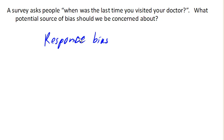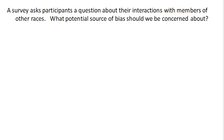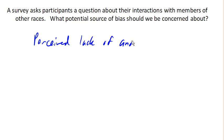Suppose a survey asks participants a question about their interactions with members of other races — how they get along with, say, Black people or Asians. What would we be concerned about here? Here we have something called a perceived lack of anonymity. Particularly if this was being given in a face-to-face interview process, the person being asked might — if they have racial biases — be uncomfortable sharing that because they don't want to be perceived as racist. So they may be uninclined to give an accurate answer.